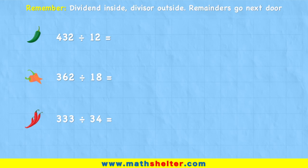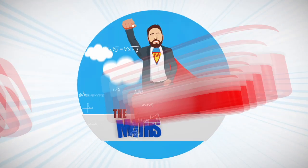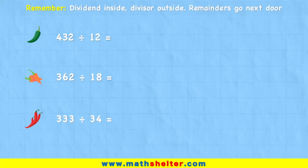Today we're going to be looking at how to divide with two-digit divisors. Let's go. So first of all, let's just think about what these words here mean. Because today we have to remember that the dividend goes inside and the divisor goes outside of the bus stop.